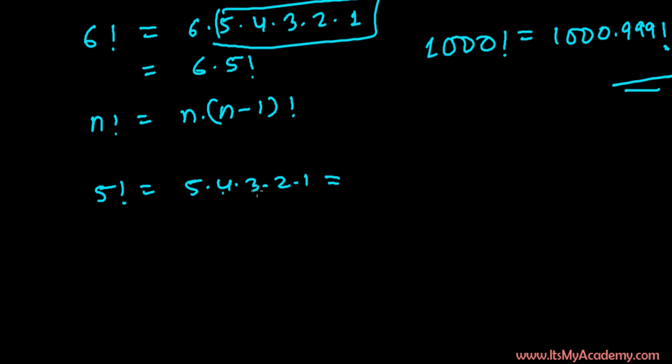5 times 4 is 20, times 3 is 60, times 2 is 120. So 5 factorial equals 120. And 5 factorial can also be written as 5 times 4 factorial, because this part is 4 factorial. In a similar way,